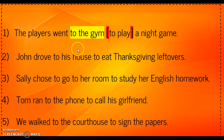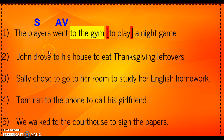Now, looking at what's left, I want to ask: what's the subject? The players. What did the players do? The players went. 'Went' is an action verb. So now I ask myself, the players went whom or what? Really, the only thing I have left that could be the direct object is 'a night game.' But if I said the players went game, that doesn't really make sense. So for this action verb, the main verb of our sentence, we don't have a direct object.